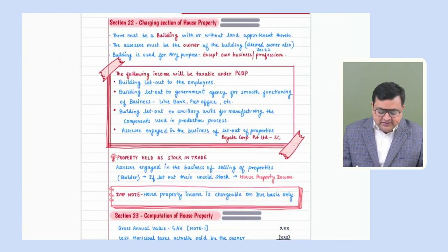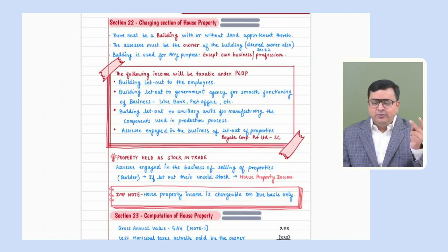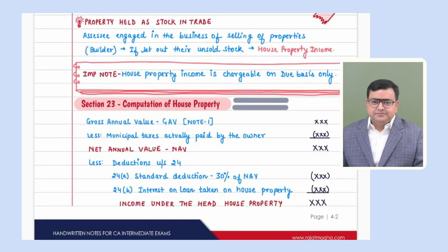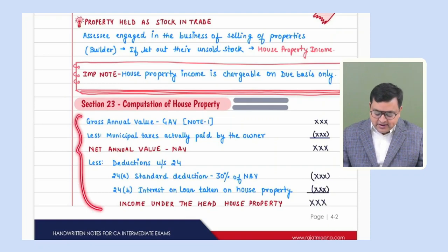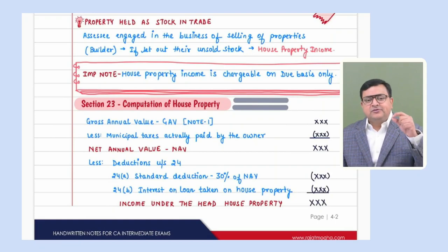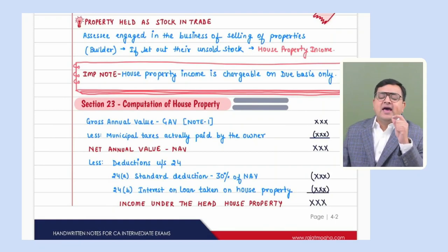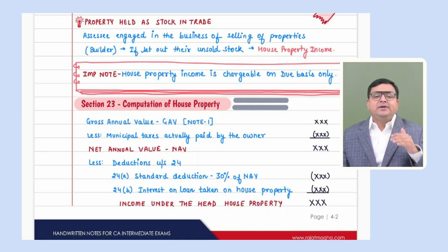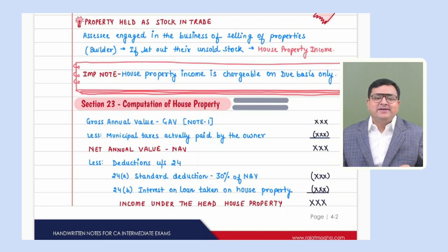So this was Section 22 — charging section: first, building; second, owner or deemed owner; third, it should not be used for business or profession. Section 23 says how you will compute your house property income. So please stick to this format. First of all, you have to calculate your gross annual value. How you will calculate your GAV, we'll see in a couple of minutes. First of all, calculate your GAV, then deduct municipal taxes actually paid during the previous year by the owner.